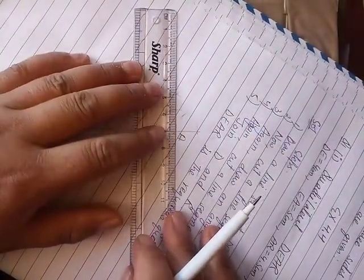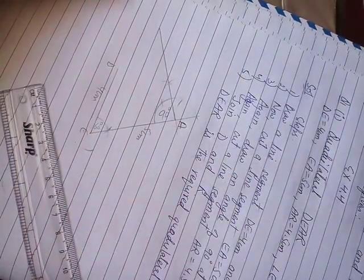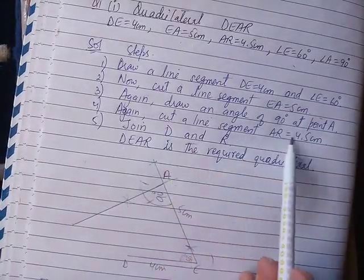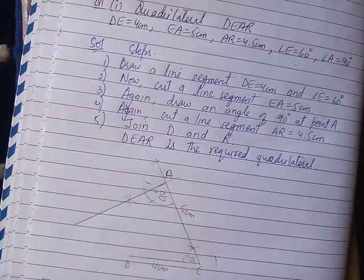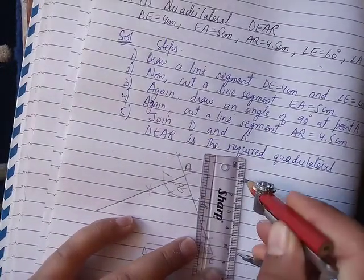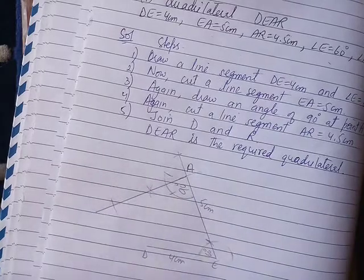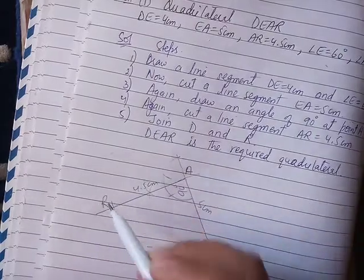Again, draw an angle of 60 degrees. Next, cut a line segment AR equal to 4.5cm. Using the scale, measure 4.5cm and mark point R.